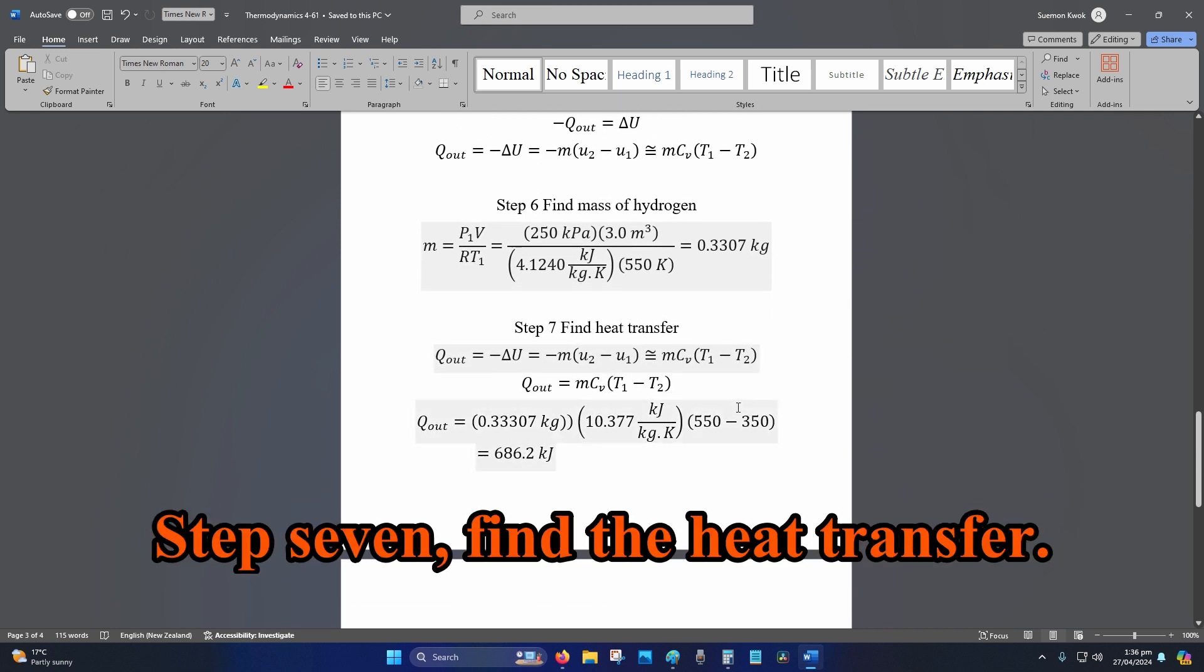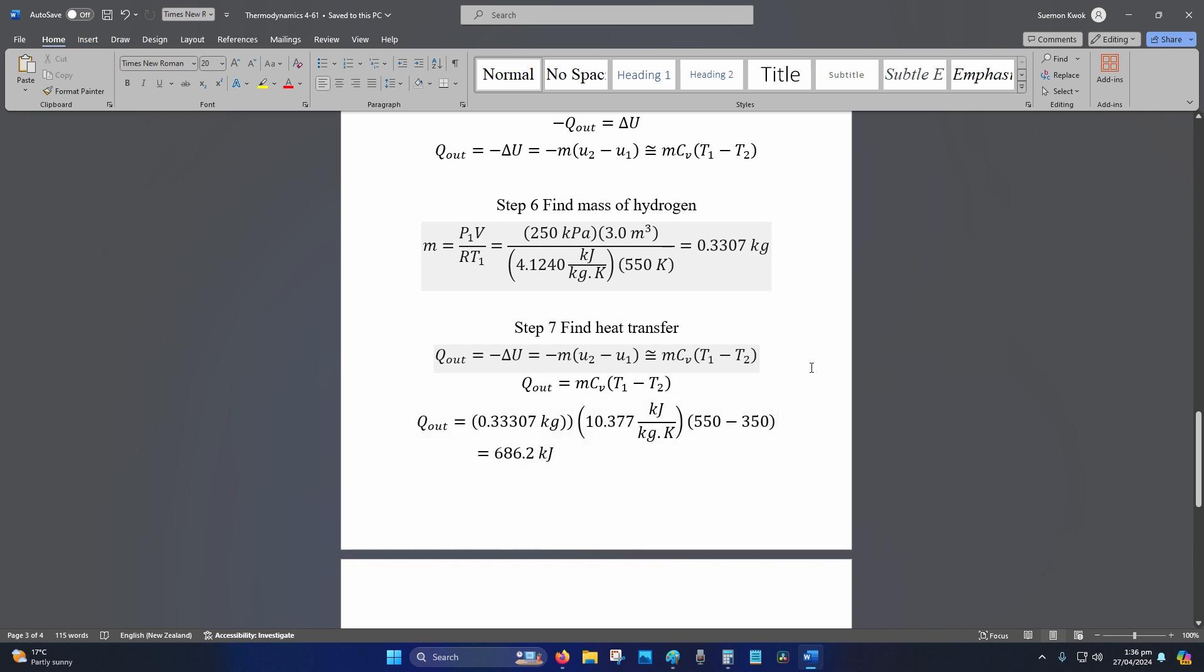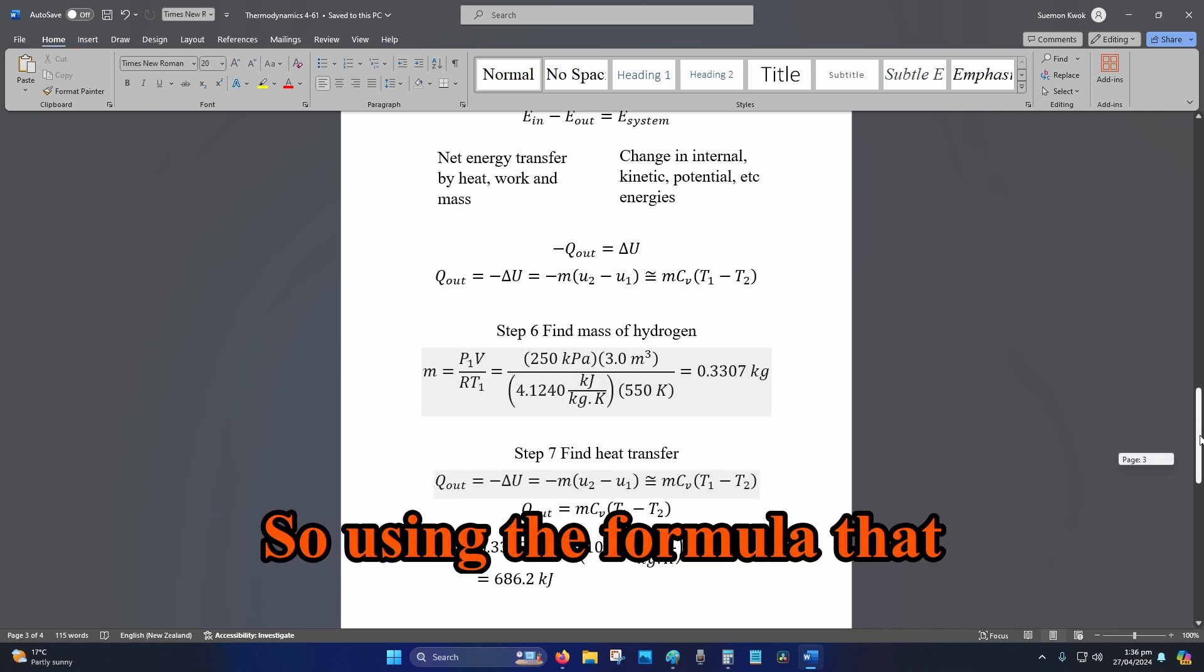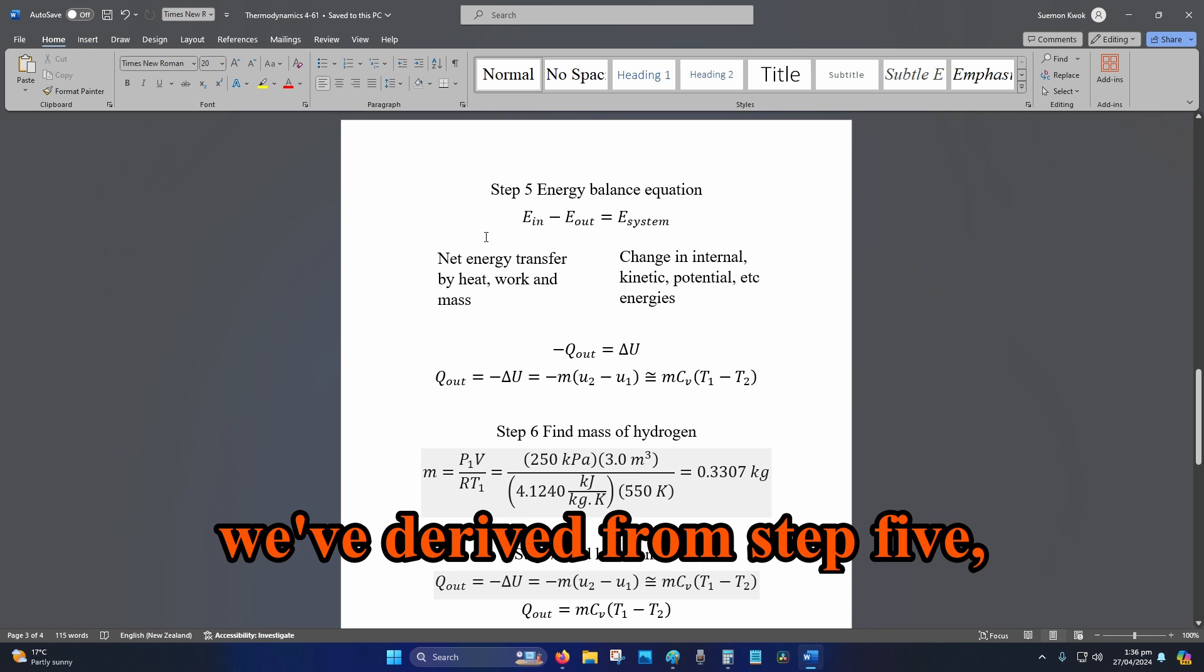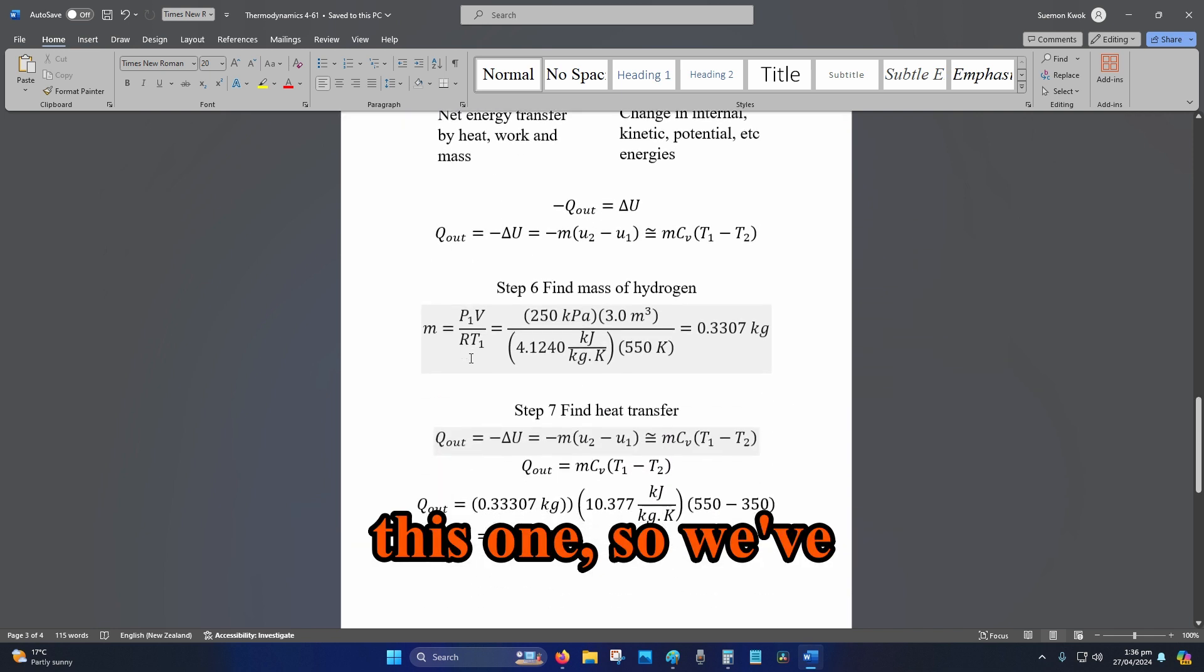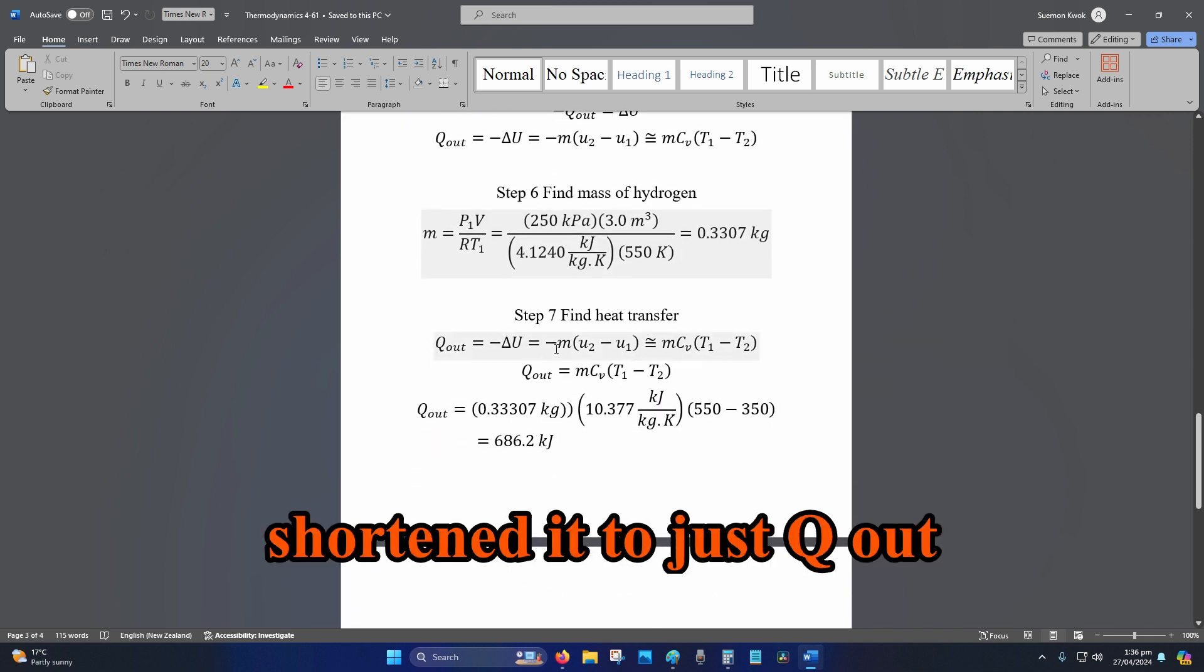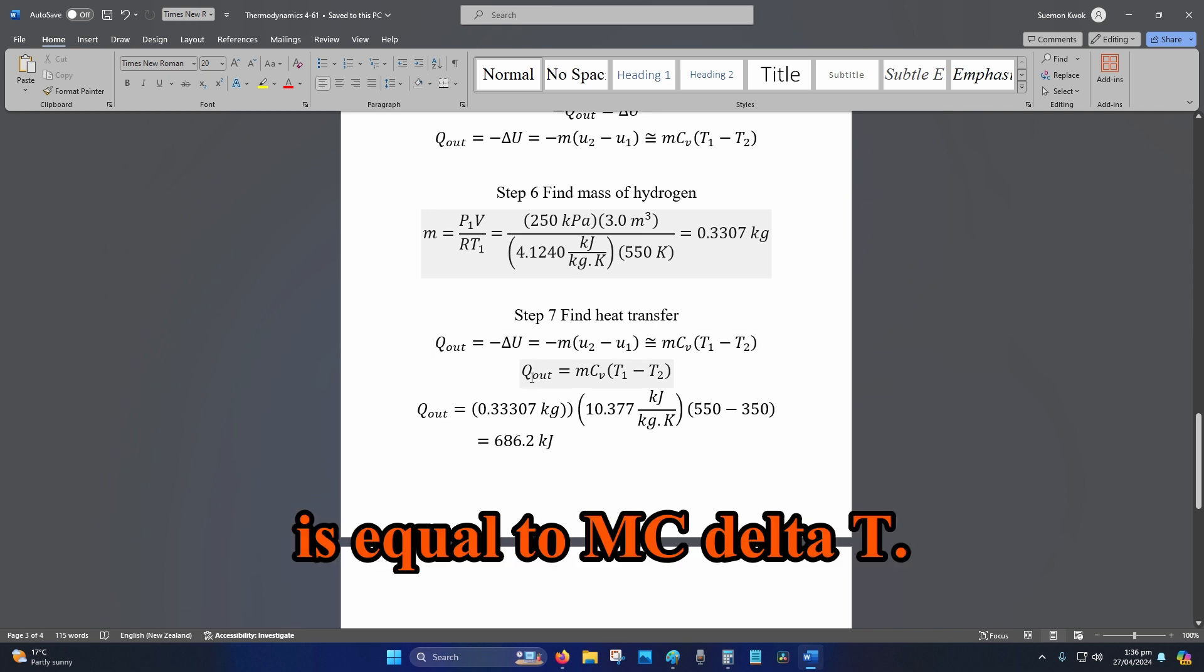Step 7, find the heat transfer. Using the formula that we've derived from step 5, we've shortened it to just Q out is equal to MC delta T.